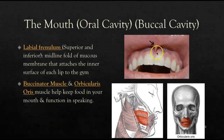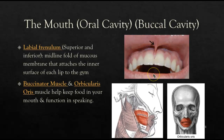We also have a fold known as the labial frenulum. There is a superior one and an inferior one attached to the lower lips, and this is made up of a mucous membrane that attaches the inner surface of each lip to the gum.